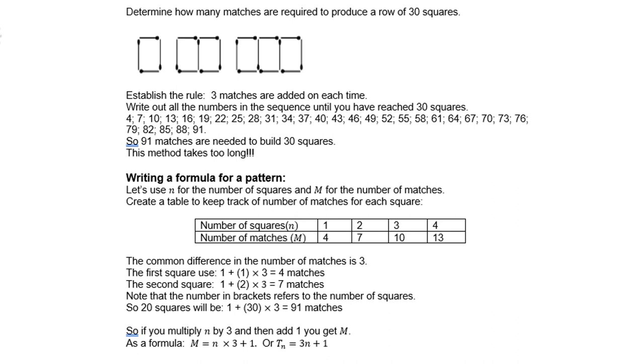So what you can do now, when you have to find 30 rows, is just replace n with 30. And the answer will be 91, because 3 times 30 is 90, plus 1 is 91.